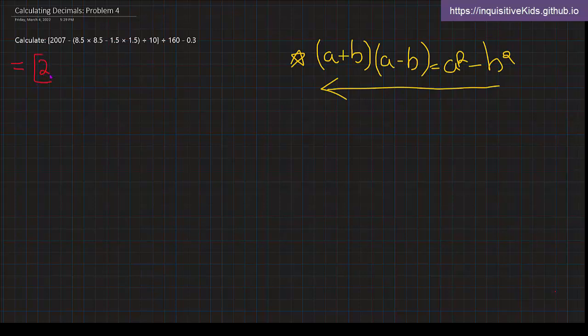We still have 2007, and in here we have 8.5 times 8.5 minus 1.5 times 1.5. This is basically 8.5 squared and this is 1.5 squared. Almost immediately we can relate to this very important equation right here.